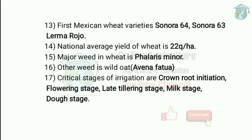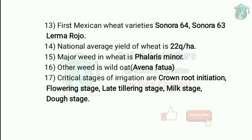The national average yield of wheat is 22 quintals per hectare. The major weed in wheat is Phalaris minor, controlled by isoproturon at 2 kg per hectare, applied 30 to 35 days after sowing. Another weed is wild oat, Avena fatua, also controlled by isoproturon.